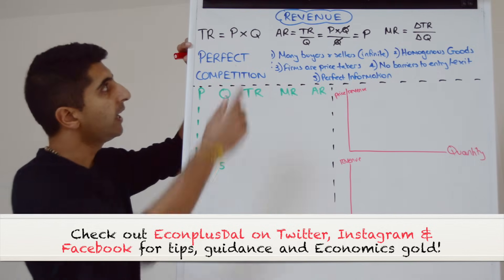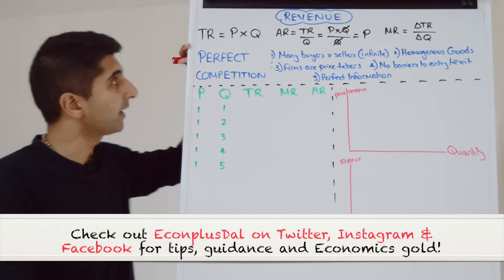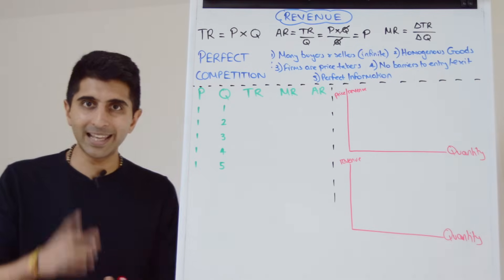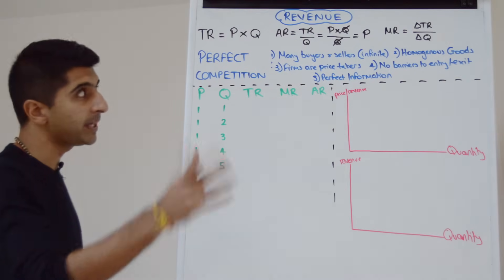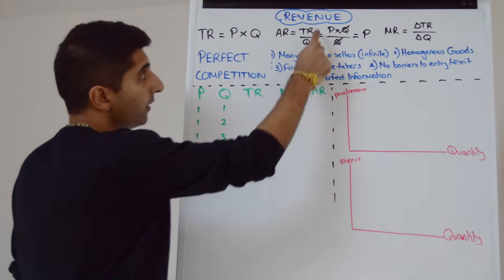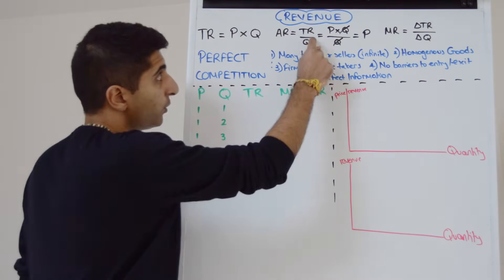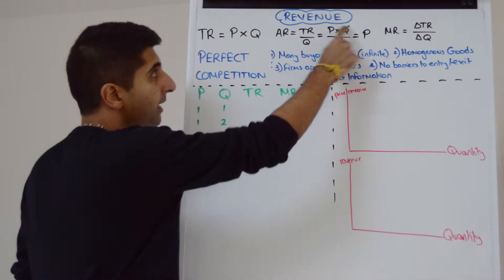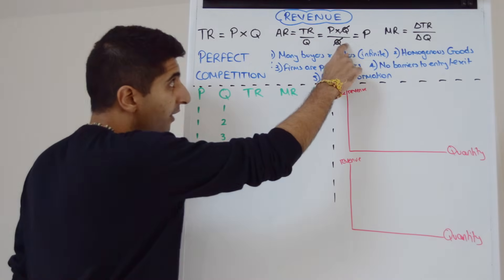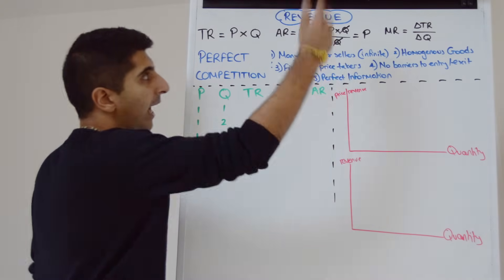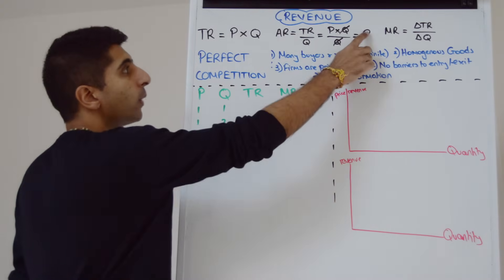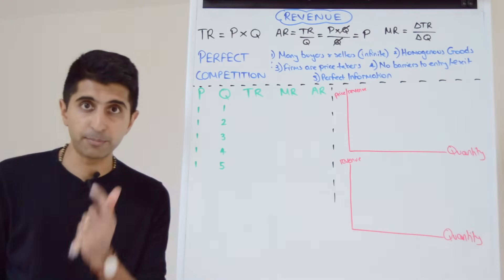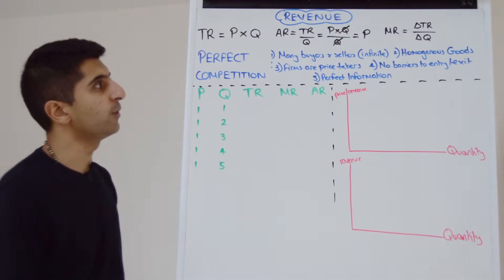Total revenue is just the price that a business is charging multiplied by the quantity they are selling at that price, so just P times Q. Average revenue is just total revenue divided by quantity, but if we play that through we get P times Q over Q — cancel out the Qs, we're left with just price. So average revenue is just the price — a great trick for you there.